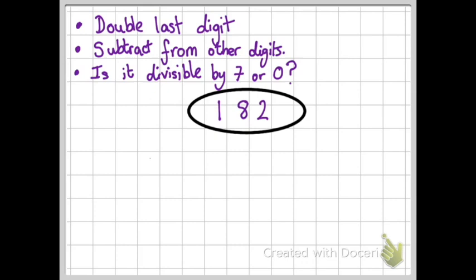Now here's what the rule is. There are three parts to it. You've got to double the last digit, subtract that doubled digit from the other digits, and then see if what you're left with is divisible by seven or is zero.